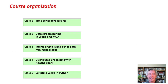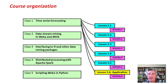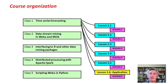The course is organized just like the other courses. There are five classes; each class corresponds to about a week. This first class is on time series forecasting, then data stream mining, interfacing to R, distributed processing, and Python scripting. Within each class there are six lessons. Each lesson is a brief YouTube video — five to ten minutes, like this one — followed by an activity. In these activities you actually get to use WEKA to do things yourself. This is where you do your real learning; the activities are very important in this course.